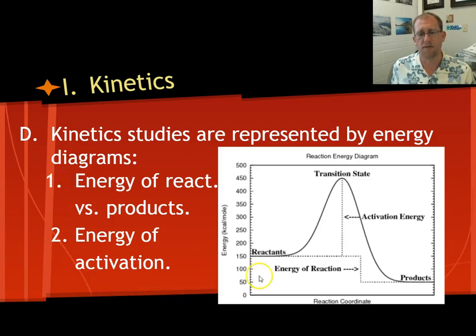Kinetic studies are represented by energy diagrams. They talk about the energy of the reactants and the energy of the products, and then the activation energy. Now this is what plays a big role in how fast it happens. The difference between the reactant energy and the product energy, this is the delta H. And you could have a delta H that's the same with a very small bump or a very large bump.